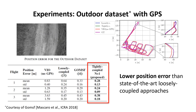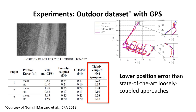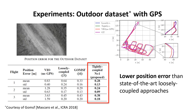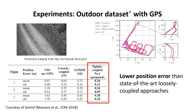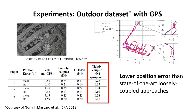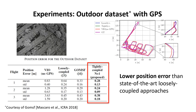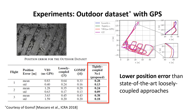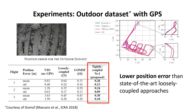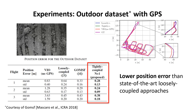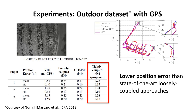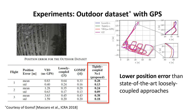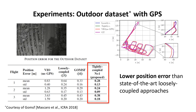The second dataset used in our experiments contains three flight sequences from a UAV equipped with a GPS receiver. The table compares our method to the VIO-only algorithm and two loosely coupled approaches in terms of position error. Our algorithm achieves lower position error than the state-of-the-art loosely coupled approaches.